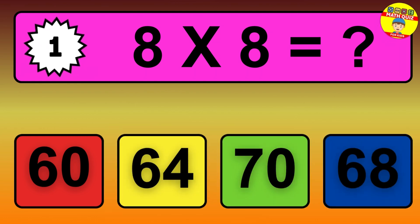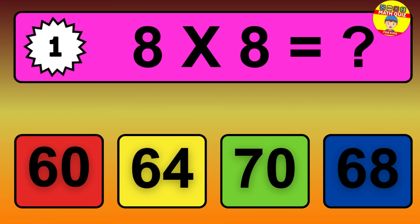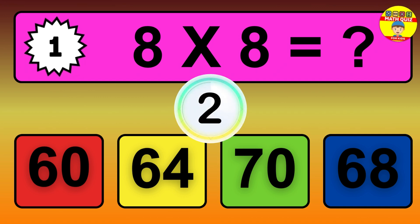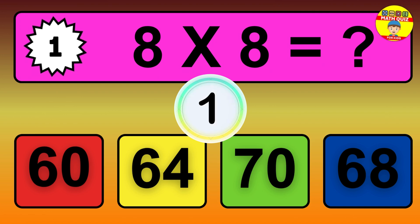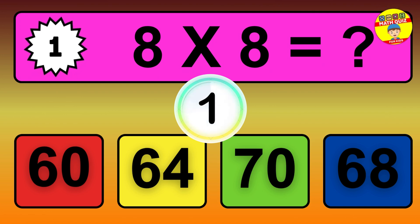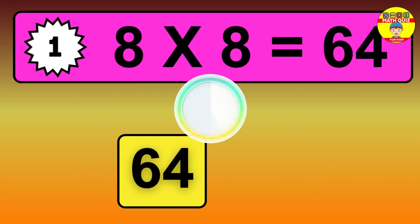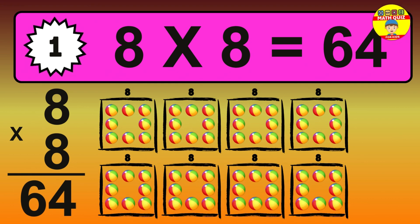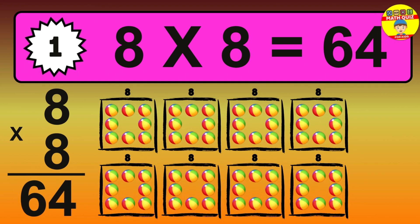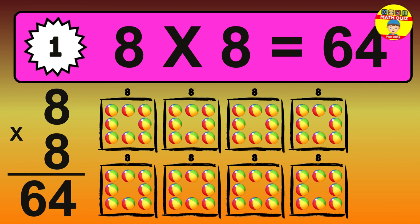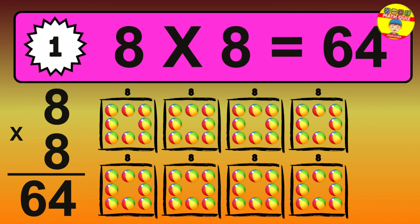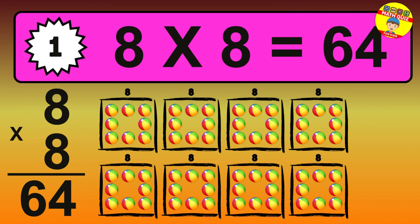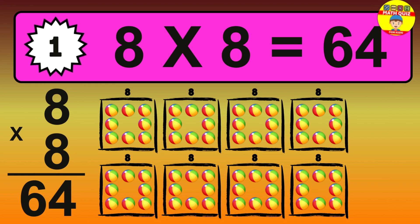Question 1. 8 times 8 equals what? The answer is 8 times 8 is 64. To calculate, we have 8 groups with 8 balls each. So how many balls do we have? 64 balls.